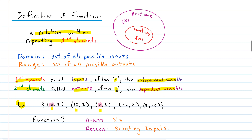Something else we should discuss: the definitions of domain and range. The domain is defined as the set of all possible inputs, and the range is the set of all possible outputs.